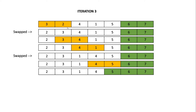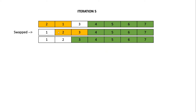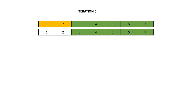In iteration 3, we compare the first two elements, and since 3 is greater than 2 we swap to get 2 and 3. Then 3 and 4 — no swap. Then 4 and 1 — swap required. Then 4 and 5 — no swap. 5 is now at the correct place. In iteration 4: 2 and 3 — no swap; 3 and 1 — swap required; 3 and 4 — no swap. In iteration 5: 2 and 1 — swap required, giving 1 and 2. In the next iteration, 2 and 3 are compared — no swap, so 3 is locked. In the last iteration, 1 and 2 are compared — no swap. The final sorted output is 1, 2, 3, 4, 5, 6, 7.